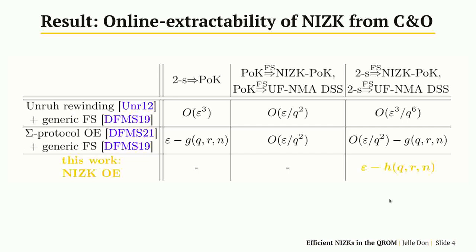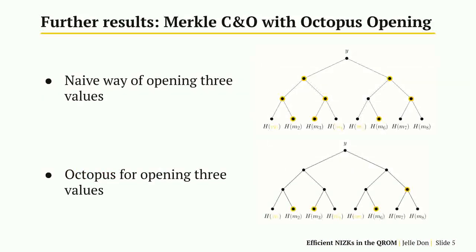By now getting rid of the q-squared factor, we obtain the first tight reduction of a Fiat-Shamir-based NIZK or signature scheme in the QROM — that is the main result of our work. We further show that this reduction also works on commit and open protocols that use a Merkle tree for the commitment, allowing for a special so-called octopus opening, which is a more efficient way of opening multiple values at the same time. If you want to study this in more detail, I invite you to read the paper or come to our talk at the conference.